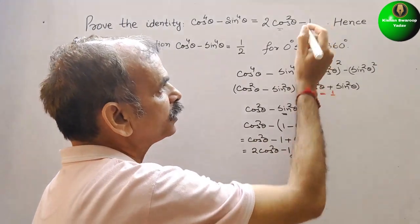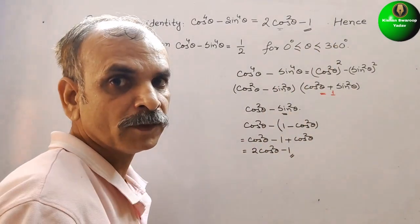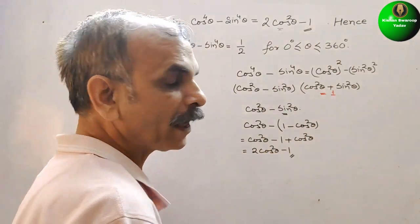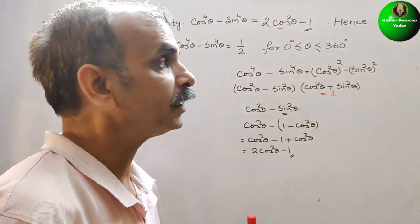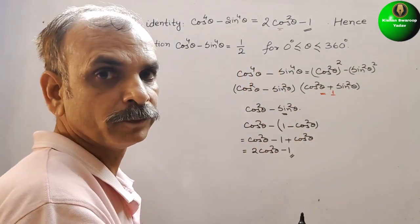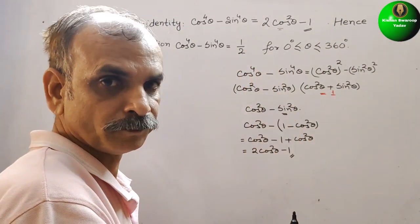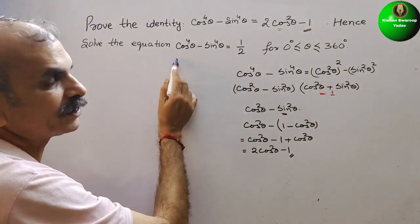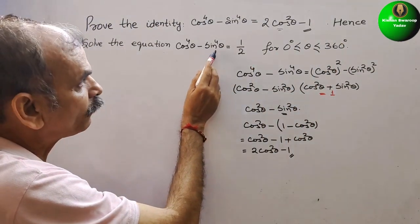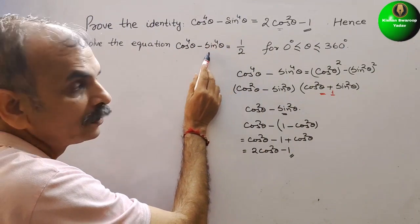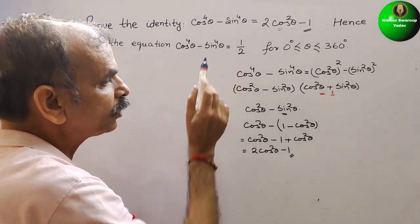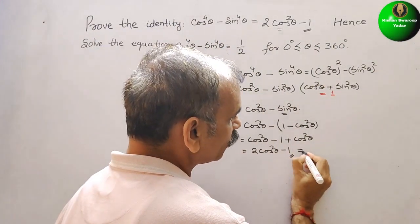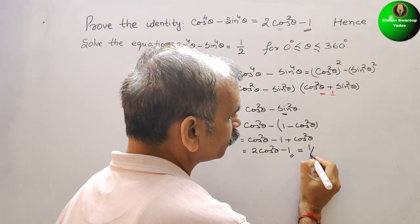Now we have already proved this. They have told 2 cos square theta minus 1 is equal to 1 by 2 — hence solve the equation. We have already proved this, and that is equal to 1 by 2, so this is equal to 1 by 2.